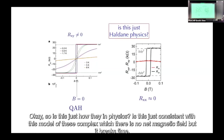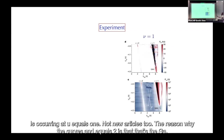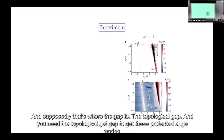Is this just consistent with complexified hoppings — no net magnetic field but time-reversal symmetry broken? Looking at the filling: the quantum anomalous Hall effect is occurring at ν=1, not ν=2. The reason ν=2 is usually expected is that's where the topological gap sits, which is needed for protected edge modes. The band structure at ν=1 doesn't admit such a gap.